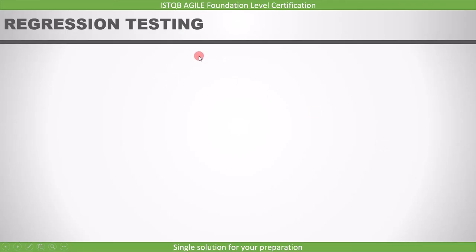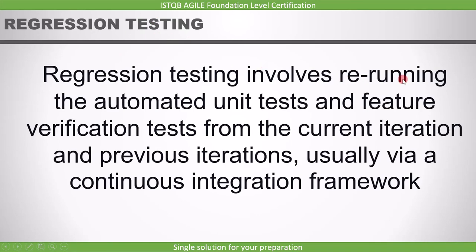Regression testing is an important aspect of the agile model. It involves rerunning the automated unit tests and feature verification tests from the current iteration and previous iterations, usually via a continuous integration framework. Regression testing is done in addition to unit testing and feature acceptance testing.